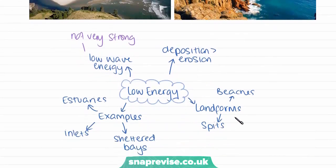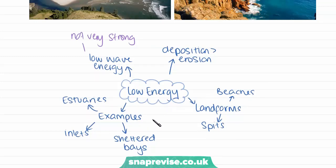The common landforms we associate with low energy coasts are beaches and spits, which we just saw in that photograph. Examples of places where we find low energy coasts are estuaries, where rivers are reaching the sea, as well as inlets and sheltered bays.